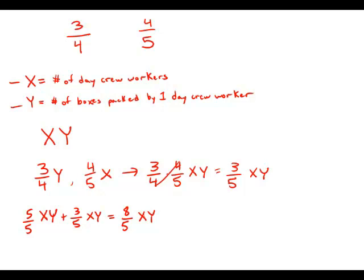And of the total eight-fifths, the daytime workers pack five-fifths of those eight-fifths. And so that is five parts out of eight, or a ratio of five-eighths. And this is answer choice E.